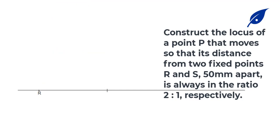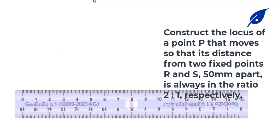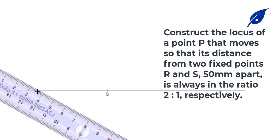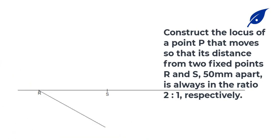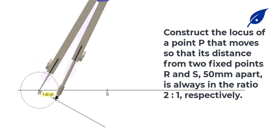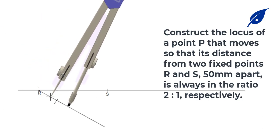First, mark point R on the line, then measure the distance from R to be 50 millimeters and mark point S. To get a ratio of 2 to 1, the total ratio is going to be 3, so we'll describe an acute angle.